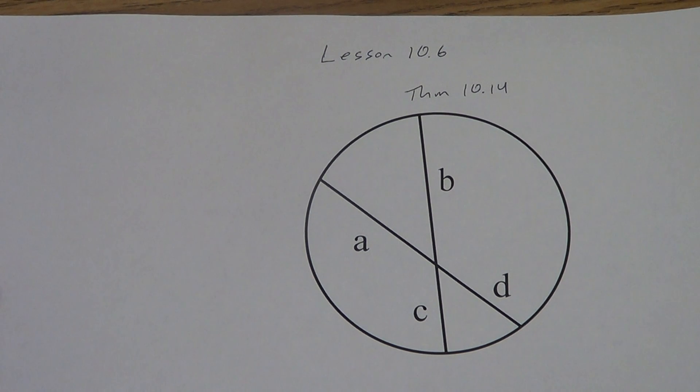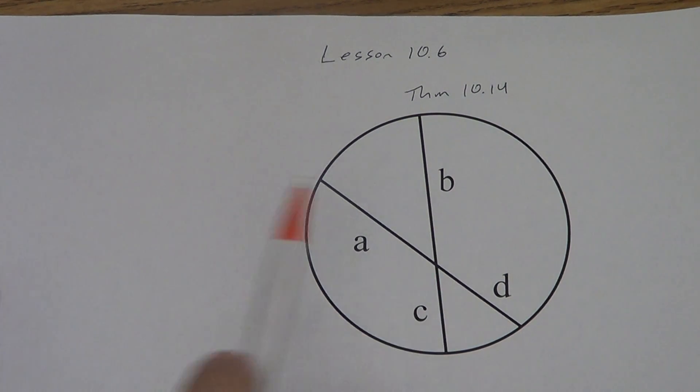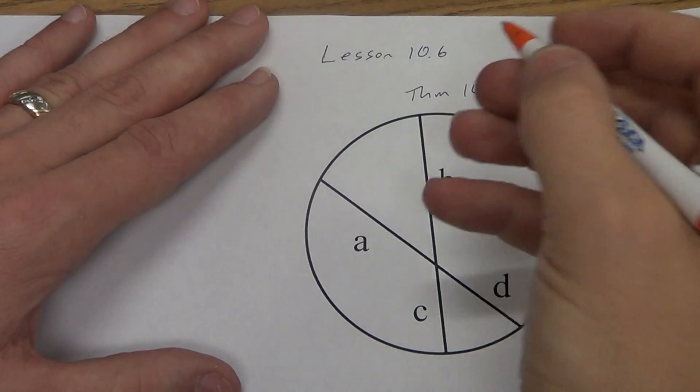This one says if two chords intersect in the interior of a circle, we can see that happening here. This is a chord. This is a chord. They are intersecting here in the interior. Then the product of the lengths of the segments of one chord is equal to the product of the lengths of the segments of the other chord. Basically, we're going to be doing some multiplying. That's what products means.